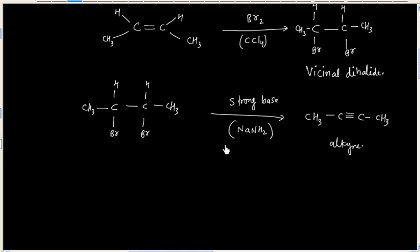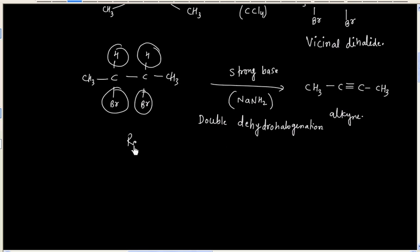Basically, this step is double dehydrohalogenation, so we have removed two moles of HBr. So this is double dehydrohalogenation.